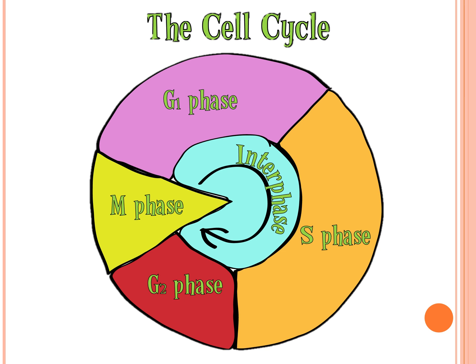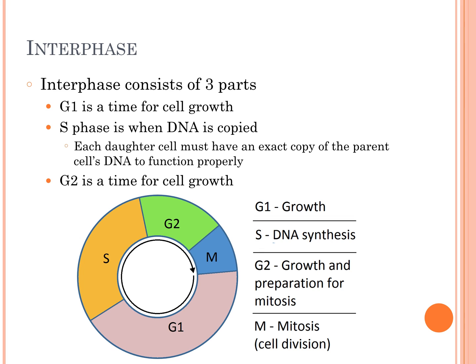The next type of asexual reproduction we'll talk about is the cell cycle. The cell cycle is for somatic cells, which are all the cells in your body except for sex cells. The first part of the cell cycle is interphase — the longest part — which has three different parts: G1, which stands for Gap 1, is a time for cell growth where the cell is making proteins that it needs and growing.